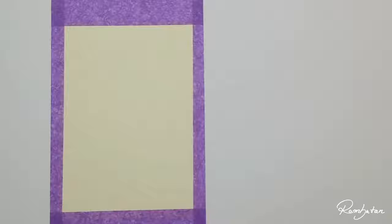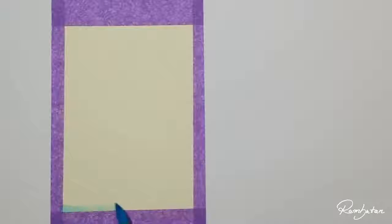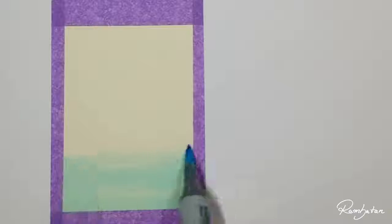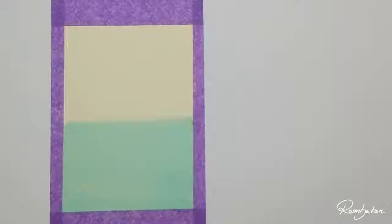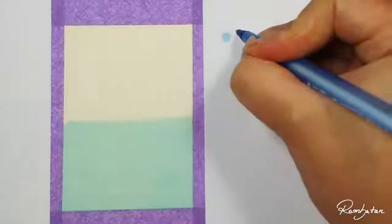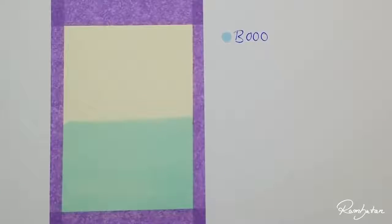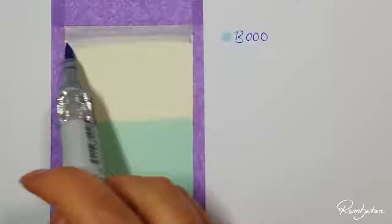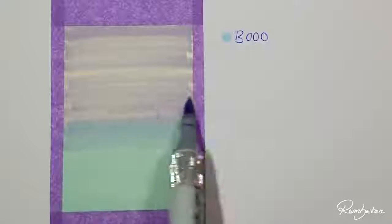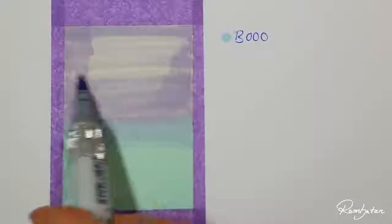Start with B000 pale blue and fill the lower half of the background. Continue with BV01 viola and start from above to below and blend it over the bottom half.